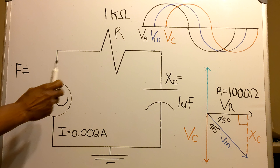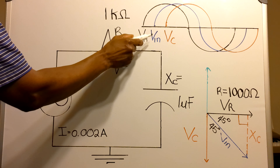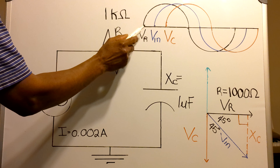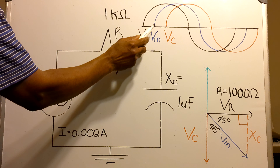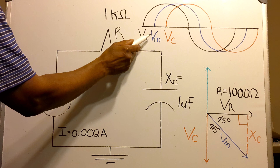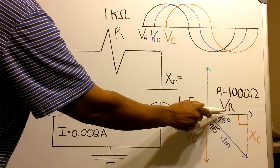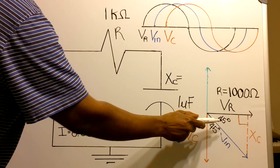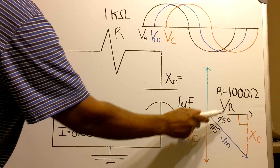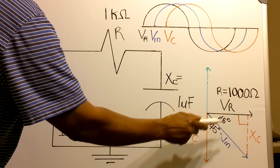At the end we're going to get three voltages: a resistor voltage, an input voltage, and the voltage across the capacitor. All three of these voltages will be out of phase. The resistor voltage will be leading the input voltage, and the input voltage will be leading the capacitor voltage — each by 45 degrees. The resistor voltage will also be leading the capacitor voltage by 90 degrees, since 45 and 45 equals 90.